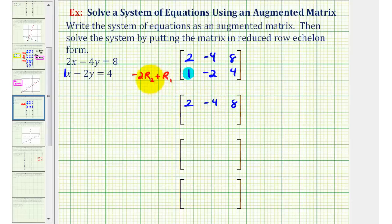The first row will stay the same. And now for the second row, we'll have -2 times 1 plus 2, that's zero. -2 times -2, that's positive four, plus -4, that's also zero.